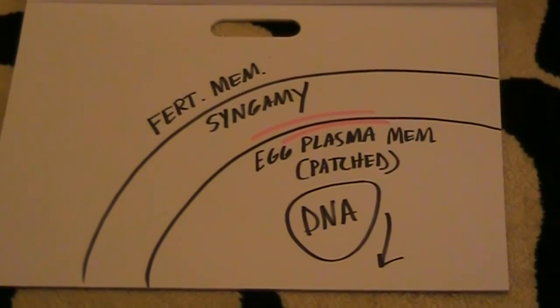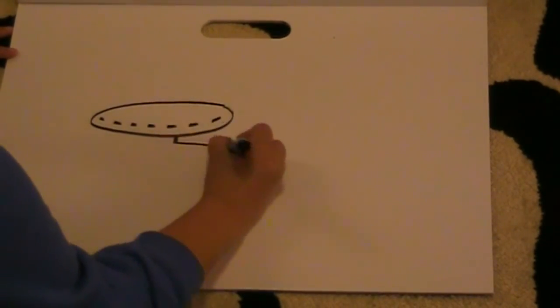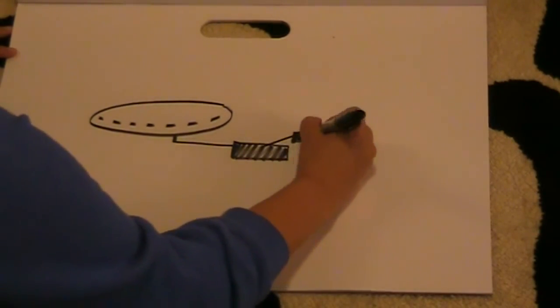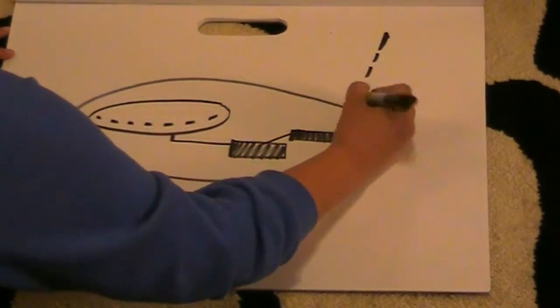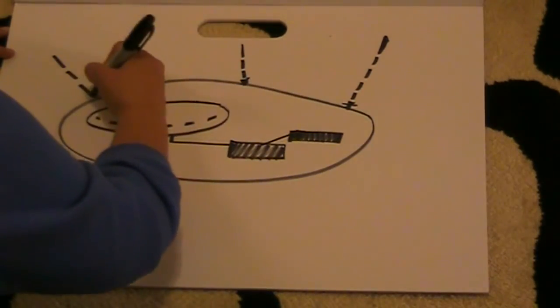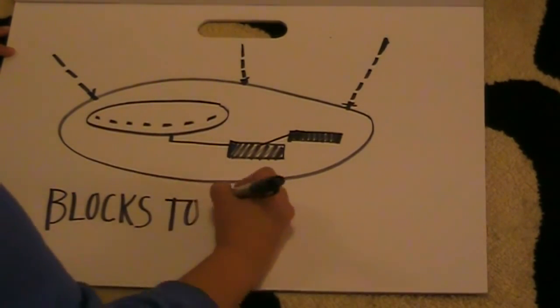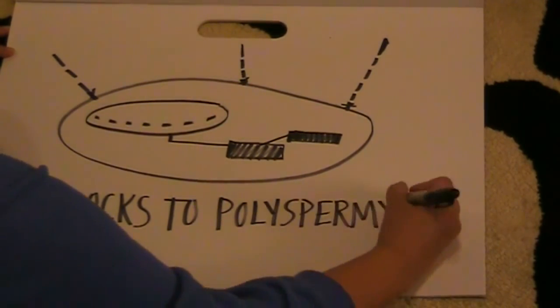With the releasing of those cortical granules earlier, one of the most important things is that it leads to blocks of polyspermy. Polyspermy is a fancy way of saying we don't want more than one sperm fertilizing the egg — no one does, really. The way it works is through the release of calcium, which starts these blocks so that no other sperm cells can get in. The best way to illustrate that is the Starship Enterprise there, being fired at with torpedoes that are being deflected. It's the same idea — you can think of the ship as the actual DNA.